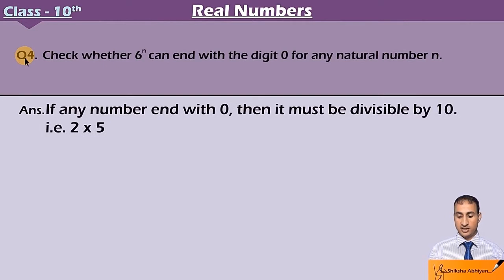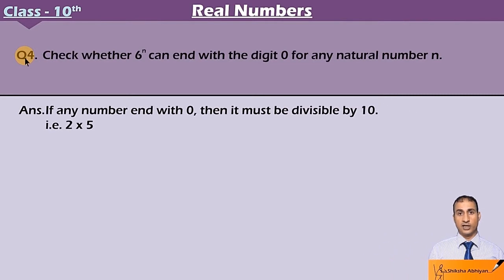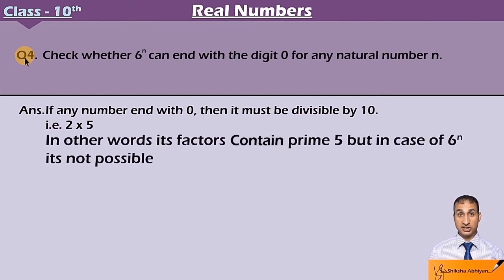So, if any number ends with 0, it's divisible by 10. If any number ends with 0, it will be divisible by 10, that is 2 × 5. That means 2 and 5 will come in its multiples. In other words, its factors contain prime 5. Its factors will definitely have 5.